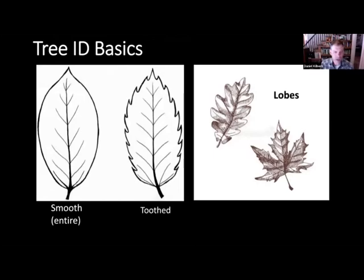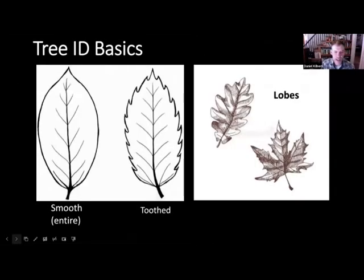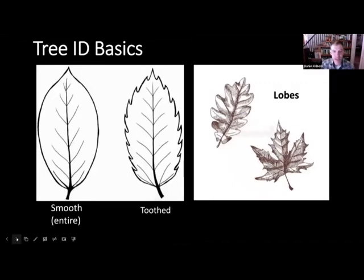Some common parts on leaves: leaves have veins with different venation patterns. The edges of the leaves have different characteristics as well — some are smooth, also called entire; some might be wavy; some have teeth, these little jagged edges. They might have lobes, which are really deep valleys or sinuses along the edge of the leaf. An oak leaf and the silver maple leaf are good examples of these deep cuts, these lobes.